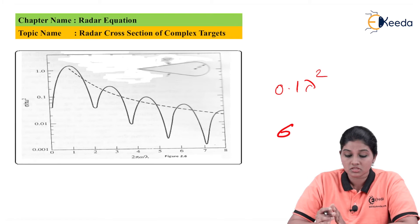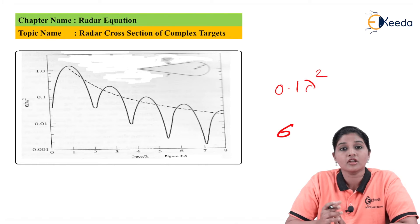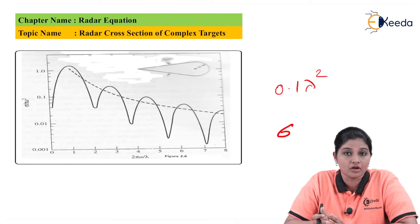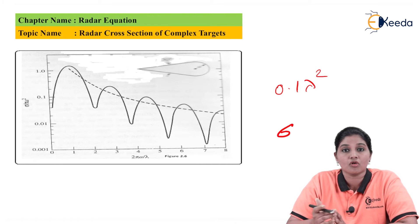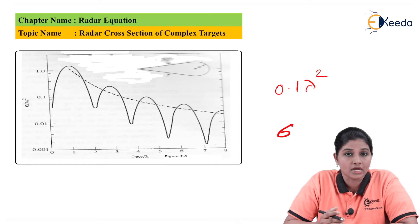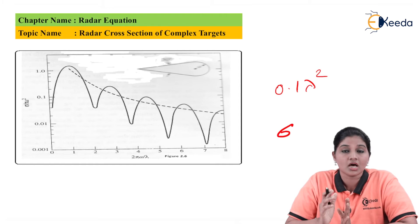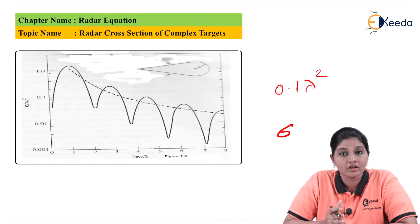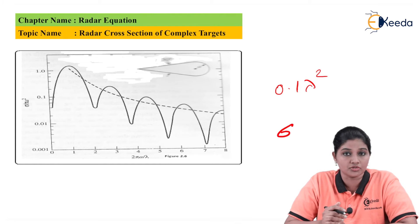This is how the radar cross-section of a complex object is calculated. There are different objects considered as standard objects — for example, sphere, cone, metal rod, and flat plate. The RCS of these objects are known. With the help of these standard objects, we can find out the RCS of complex objects.